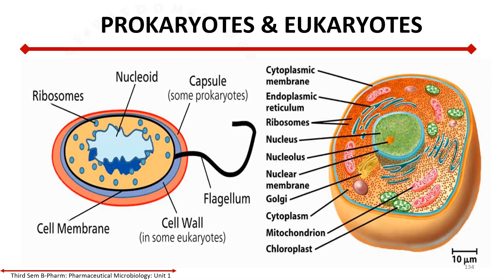Eukaryotic cells contain a cytoplasm and mitochondria. Some cells may contain chloroplasts, such as plant cells, as well as endoplasmic reticulum. These are all membrane-bounded organelles. There is also a cytoplasmic membrane and a cell wall. This is the organization of eukaryotic cells.